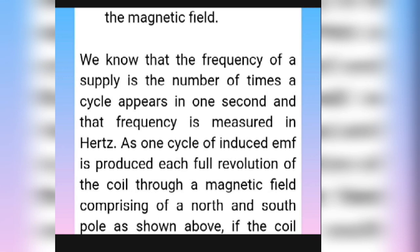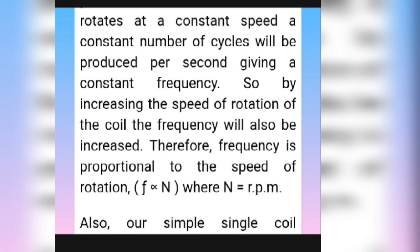The frequency of a supply is the number of cycles per second, and frequency is measured in Hertz. As one cycle of induced EMF is produced for each full revolution of the coil through the magnetic field — comprising one north and south pole — if the coil rotates at a constant speed, a constant number of cycles will be induced per second, giving a constant frequency. Increasing the speed of rotation of the coil will also increase the frequency; therefore, frequency is proportional to the speed of rotation. F is proportional to N, where N is the RPM or speed.